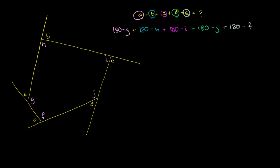If we add up all the 180s, we have 5 times 180, which is 900. And then we have minus G, minus H, minus I, minus J, minus F.